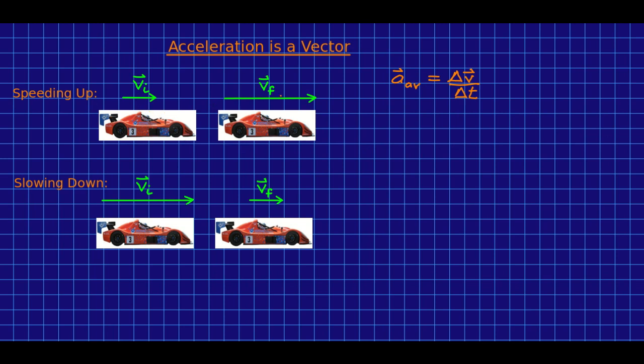Suppose we have a race car and it's speeding up. Then, as usual, to get the delta v, we're going to take vf minus vi. So let's do that.